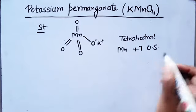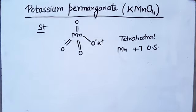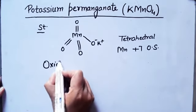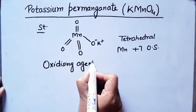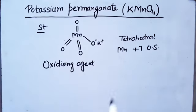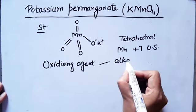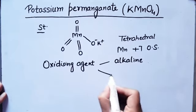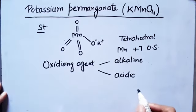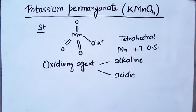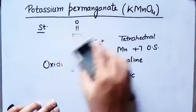The oxidation state of manganese in KMnO₄ is +7. The special feature of potassium permanganate is that it is a very strong oxidizing agent. It can be used as an oxidizing agent in both alkaline medium and acidic medium. We will discuss reactions of different organic compounds with KMnO₄ one by one.